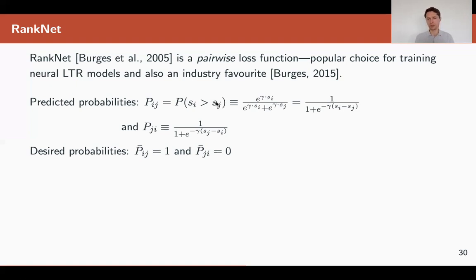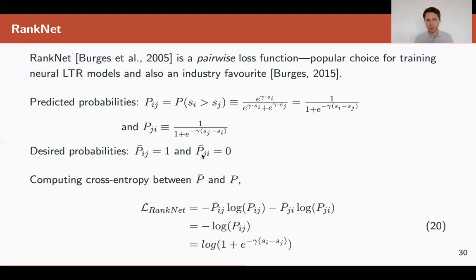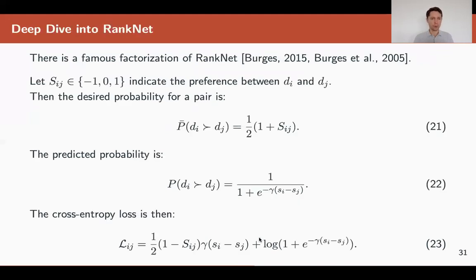We know that i should be ranked higher than j, so the desired probability is one for this and zero for ji. Then we can compute the cross-entropy using the ground truth and the model. If you put this into the formula, you get this logarithm. Then what do we do? We take a derivative, but there's one modification we want to do—a factorization that can make the practical implementation much easier.